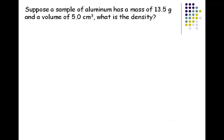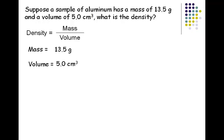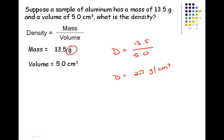Suppose a sample of aluminum has a mass of 13.5 grams and a volume of 5.0 cubic centimeters. What's the density? We know that density equals mass over volume. We're given mass at 13.5 grams and volume at 5.0 cubic centimeters. So D equals 13.5 divided by 5.0. When we plug that into our calculator, we get a density of 2.7 grams per cubic centimeter.